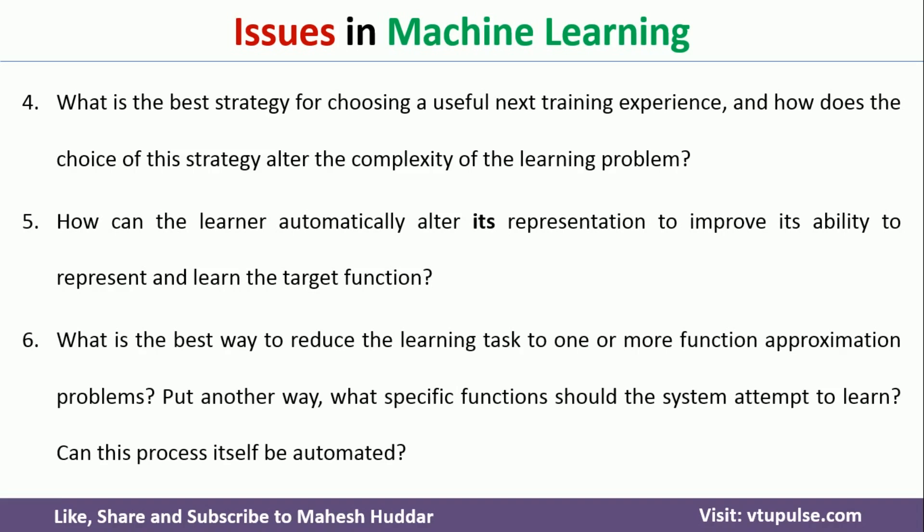The sixth issue is what is the best way to reduce the task to one or more function approximation problems — or in other words, what specific function should the system learn? If a learner gives you more than one function, which specific function should be considered for real-world implementation? Such situations are referred to as bias in a particular model, and deciding which answer to consider is a big question for the model builder or machine learning expert.